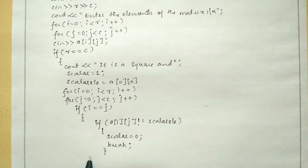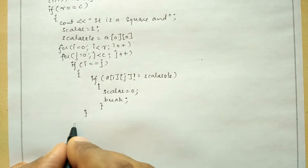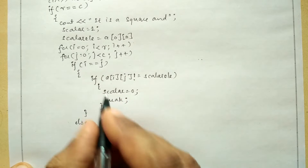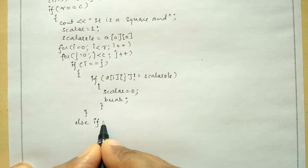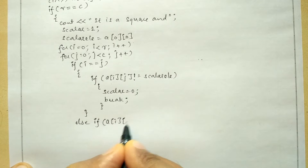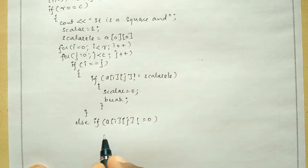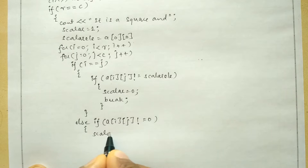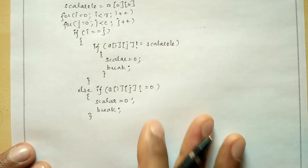Next we check else if: if i does not equal j, then the other element has to be zero. So we check else if a[i][j] is not equal to zero; in that situation it is not a scalar matrix, so we set scalar equal to zero and then use a break statement.